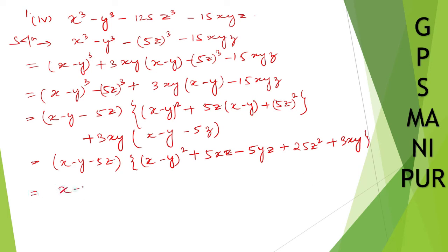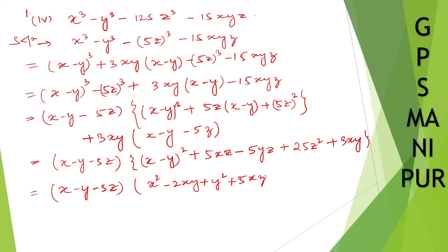Now, x minus y minus 5z — open the bracket. x minus y whole square expands to x square minus 2xy plus y square. Then plus 5xz minus 5yz plus 25z square, plus 3xy.